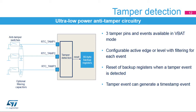The RTC embeds ultra-low-power tamper detection circuitry. The purpose is to detect physical tampering in a secure application and to automatically erase sensitive data in case of intrusion. Three tamper pins and events are supported and are functional in all low-power modes and in VBAT mode. The detection can be edge or level triggered, and the active edge or level is configurable for each event. Backup registers content are erased when a tamper event is detected.